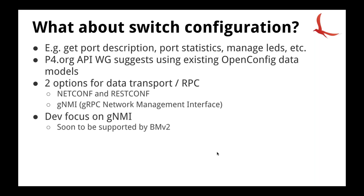For switch configuration — getting port descriptions, statistics, interface details, or temperature data from the device — the API working group suggests using existing OpenConfig data models. They're not planning to define new data models. For data transport and RPC protocols with OpenConfig, there are two options: RESTCONF or gNMI, where gNMI is a gRPC-based RPC protocol for network management.